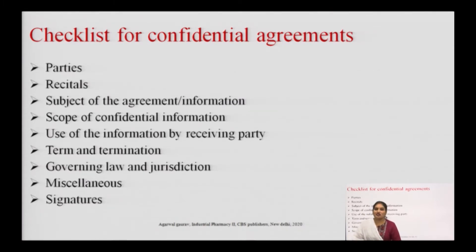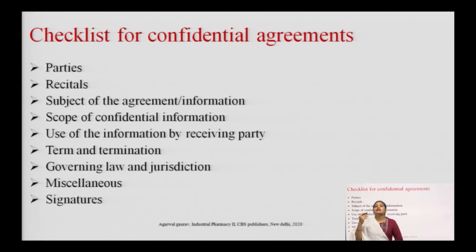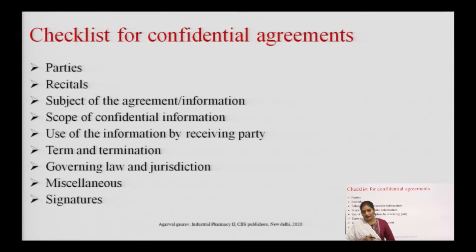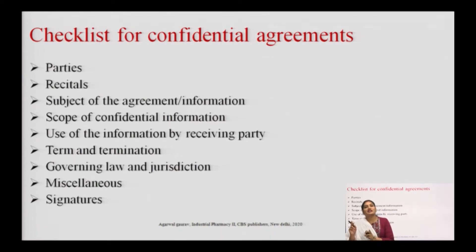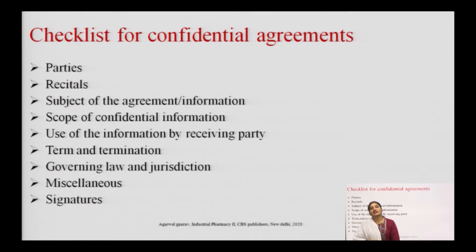Use of the information by the receiving party: two parties are involved in the confidential agreement, and wherever the receiving party will use this information should be described in the agreement. Terms and termination: what will be the period of this confidential agreement, when will the termination occur, and from which date to which date it is active should all be described.